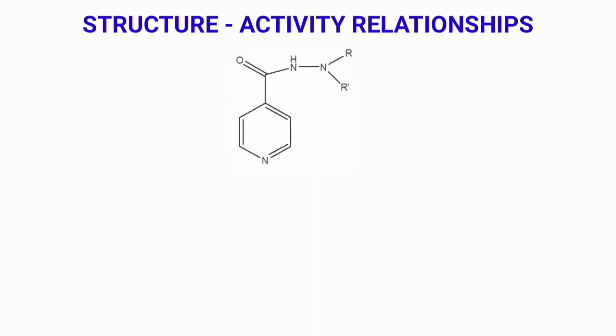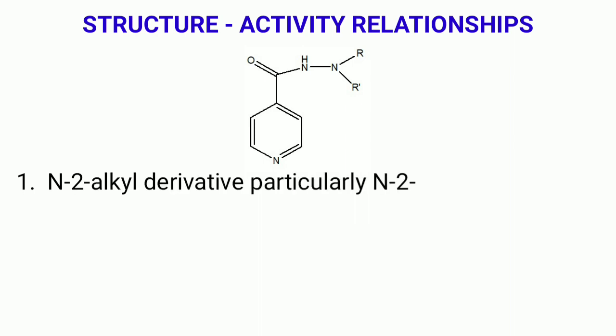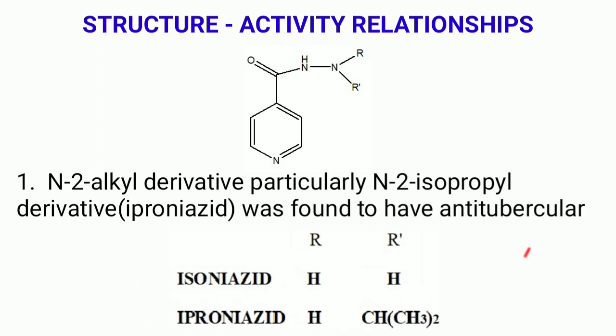Regarding the Structure-Activity Relationship of Isoniazid, the N2-alkyl derivative, particularly the N2-isopropyl derivative, i.e. iproniazid, was found to be active. The compound was also found to have a psychomotor stimulant effect as it inhibits monoamine oxidase. However, because of its hepatic toxicity, the drug was discontinued.